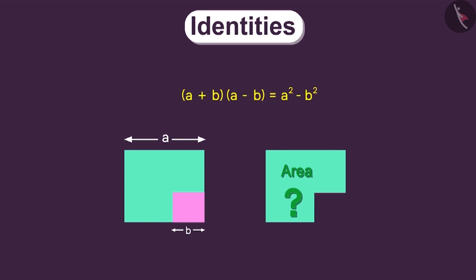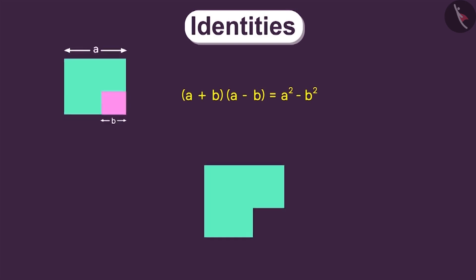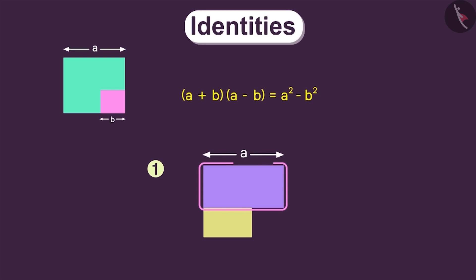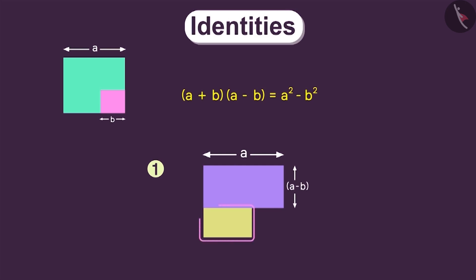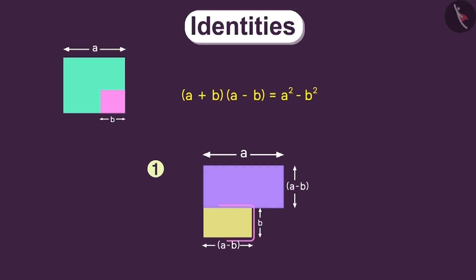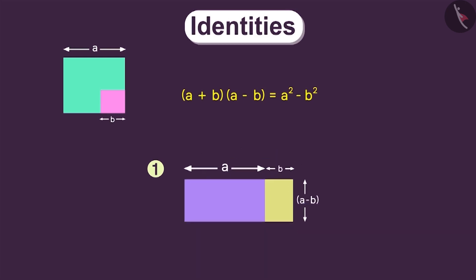There are two ways to find the area of this remaining portion. We can see that this remaining area can be divided into two rectangles. The length of the first rectangle is equal to a and its breadth will be equal to a minus b. The breadth of the second rectangle is b and its length is equal to a minus b. But since the breadth of this rectangle equals the length of the other, we can move this rectangle and fit it over here. By doing this, we get one big rectangle. The length of this big rectangle is a plus b and its breadth is a minus b.